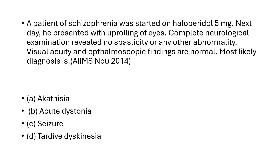The most likely diagnosis is: A) akathisia, B) acute dystonia, C) seizures, D) tardive dyskinesia. The answer is acute dystonia. Acute muscular dystonia is the earliest appearing extrapyramidal symptom caused by an antipsychotic drug like haloperidol. So the answer is B, acute dystonia.